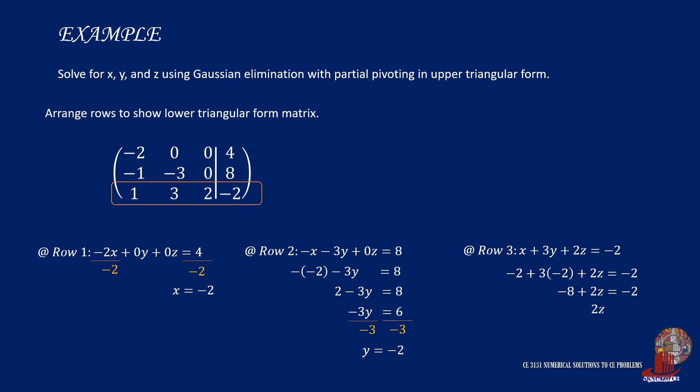Then transposing to get 2z as 6. Dividing everything by 2, we get z as 3. These are the exact values we determined working with the lower triangular form matrix.